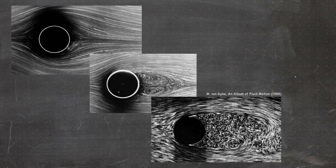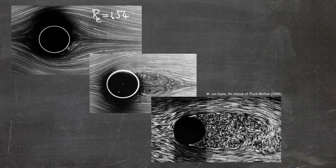Let's look at actual experimental photographs. Starting top left, we see an obstacle with flow made visible by aluminum powder. At a Reynolds number of 1.54, we see nice closed streamlines. In the next picture at Reynolds number approximately 26, two vortices appear behind the obstacle. In the final image, at a Reynolds number on the order of 2000, we have a region of fully developed turbulence.